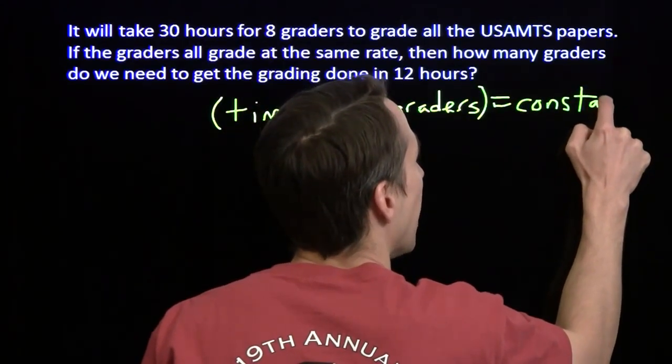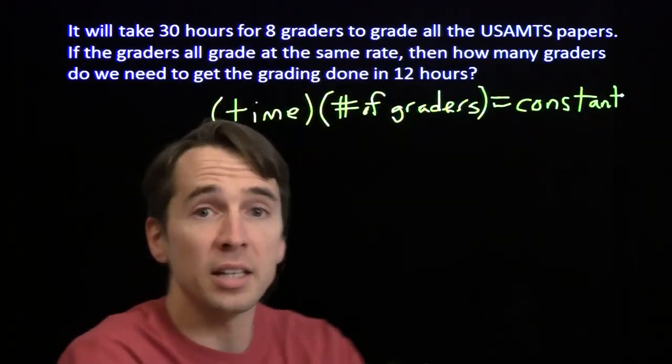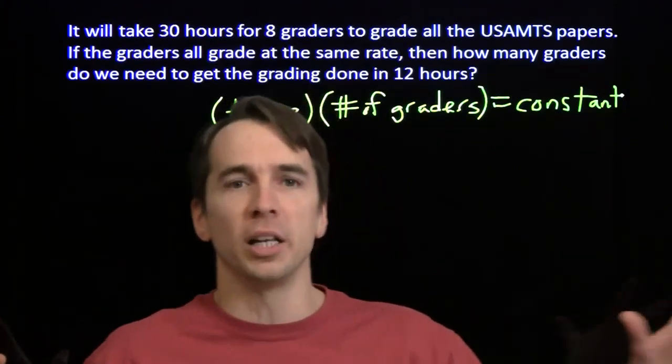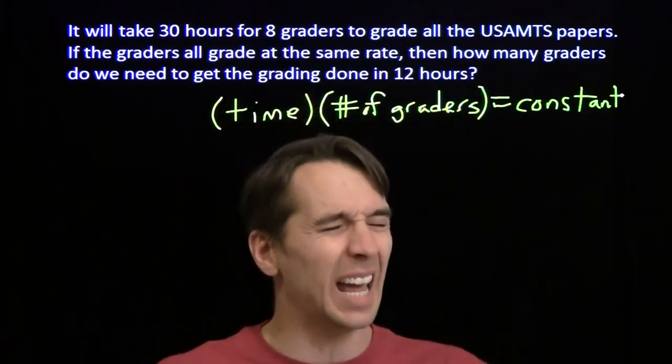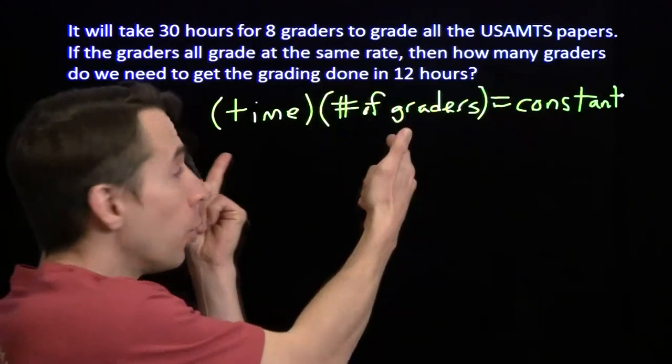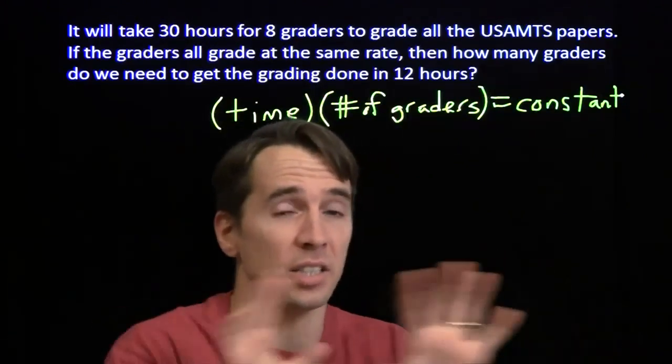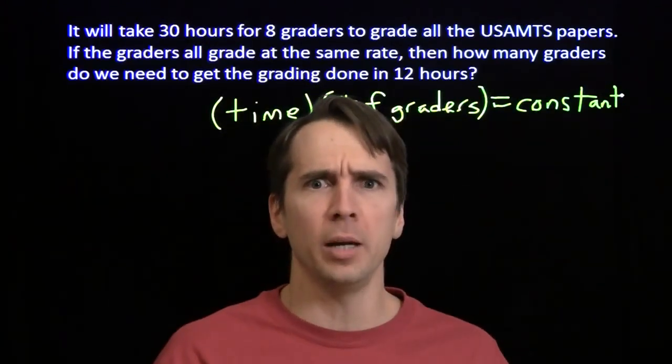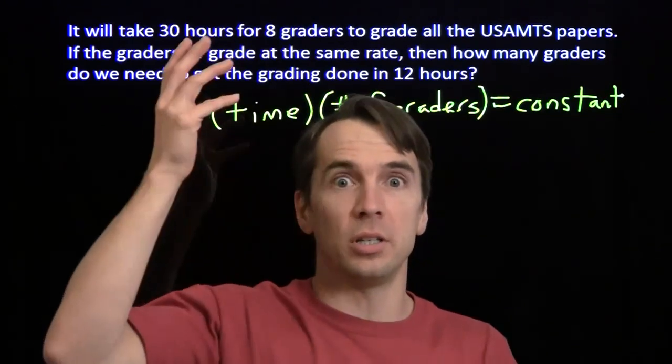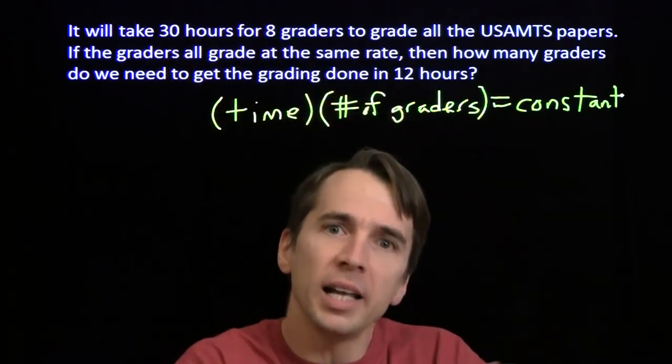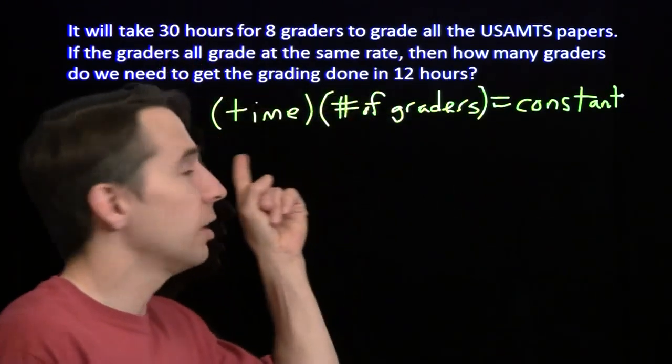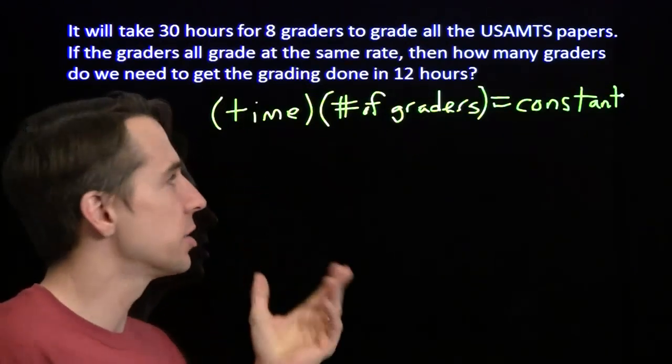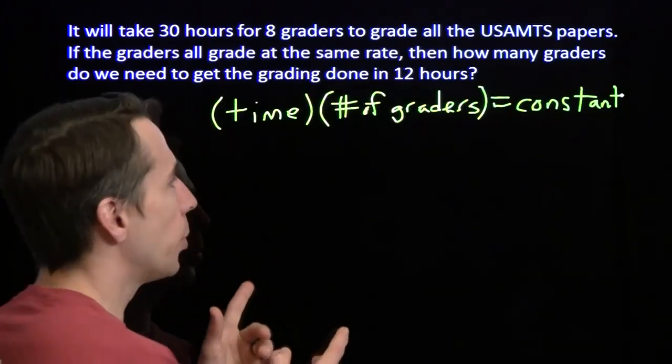So the time times the number of graders, that's a constant. That makes sense. This time times the number of graders, that's the total number of hours across everybody. If you take all the time everybody spends grading and add it all up, that's what we have. And that's a constant. That depends on the number of papers we have. If we increase the number of graders, then we divide that work among more people. It'll take us less time to finish.